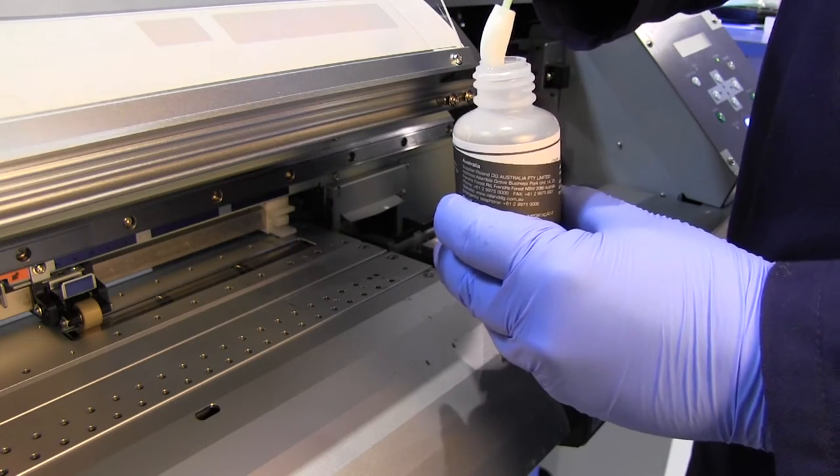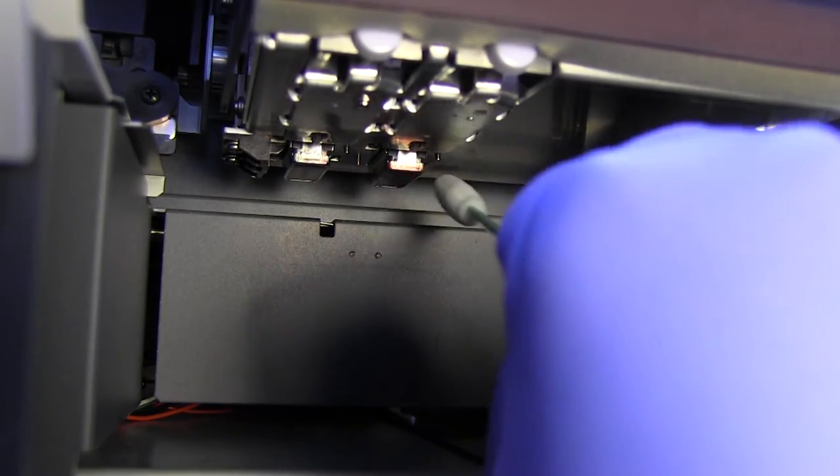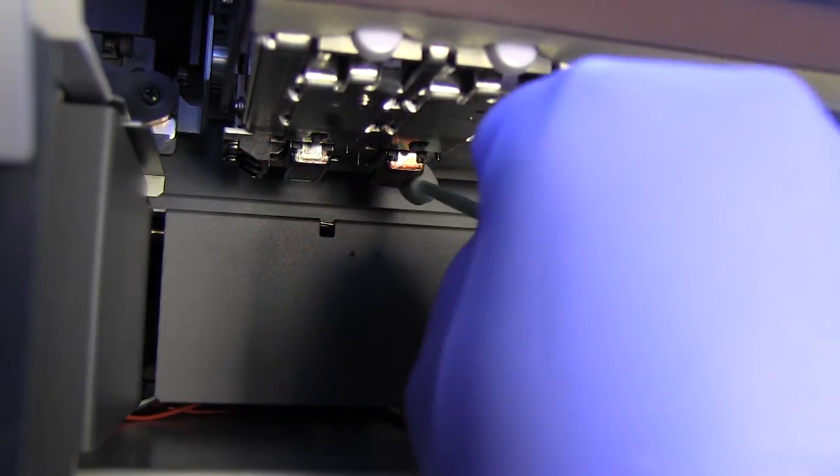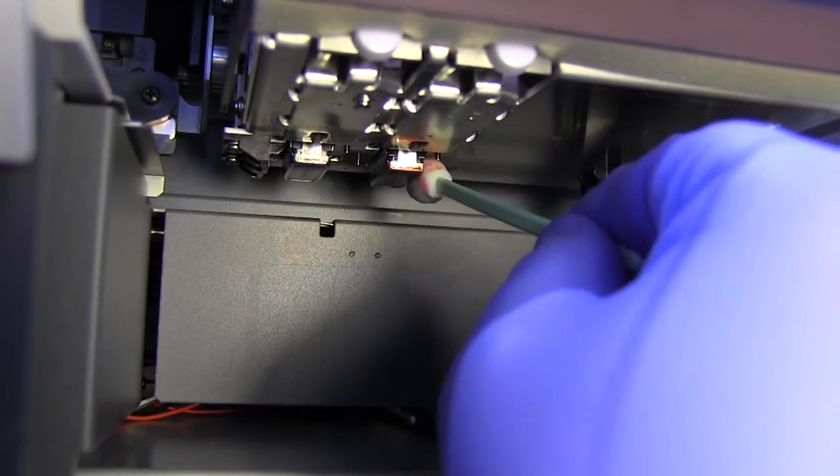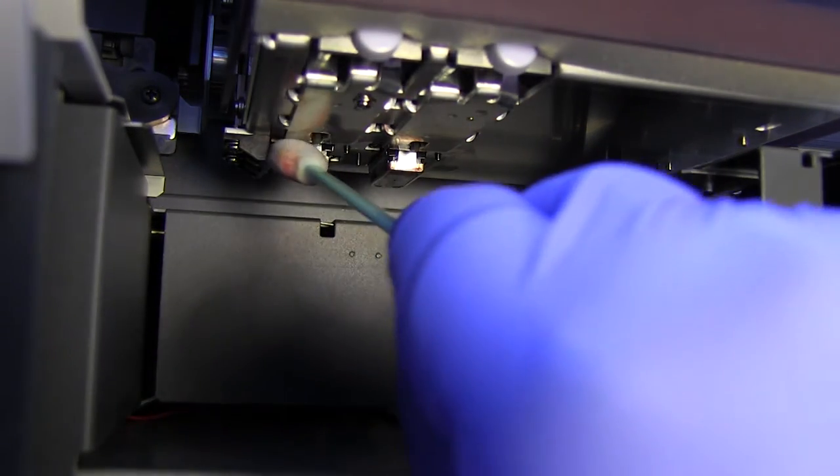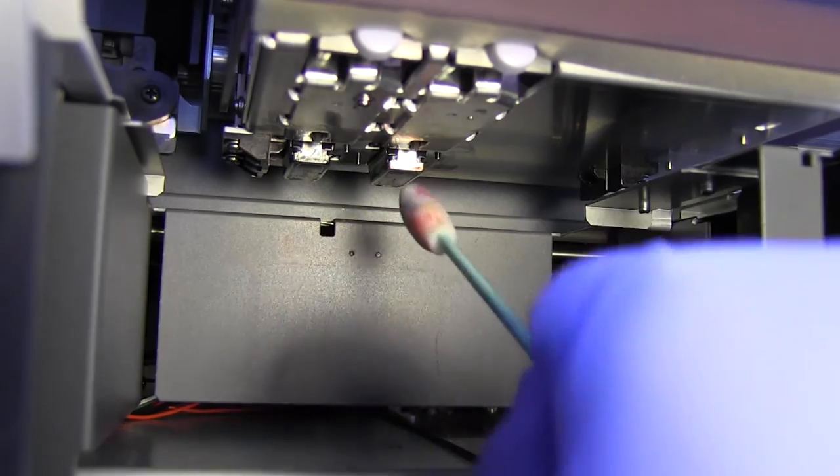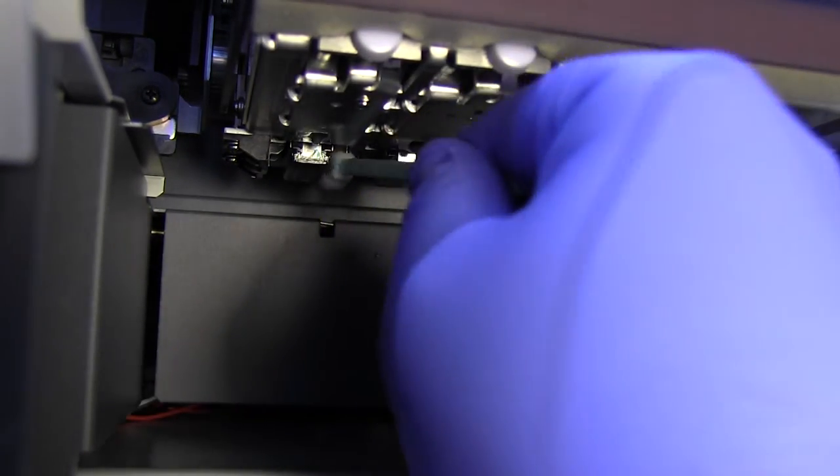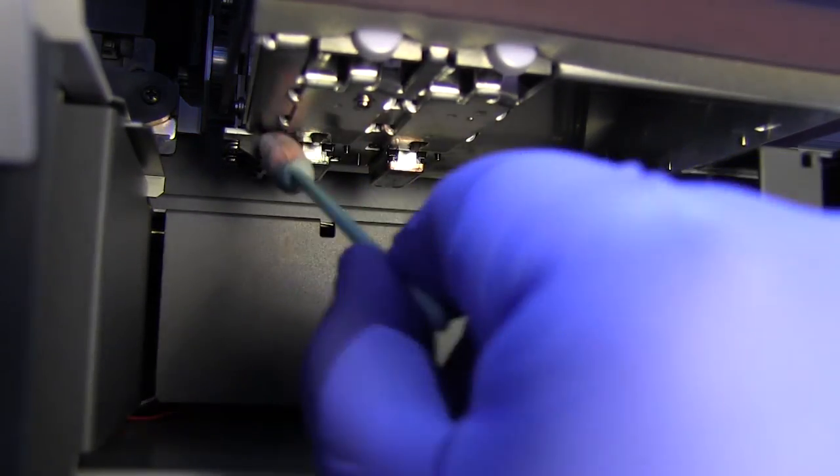Dip a cleaning swab into the cleaning solution as shown. First of all, we are going to clean the printhead surrounds. Here we are looking to clean any excess ink from the printhead frames and the black plastic headguards. Clean all the way around the printheads, but note that we do not clean the printhead surfaces.